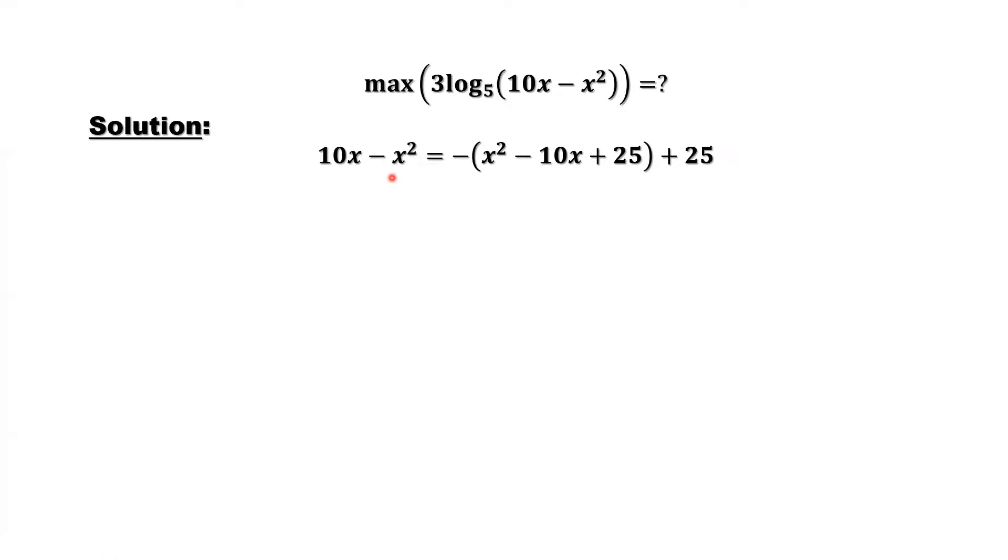You can use different ways to find the maximum value of this. You can use the derivative if you know calculus. If you don't know calculus, you can use this as a parabola. You can find the vertex because this parabola with a negative sign in front of x squared is concave down. This function has a maximum value.